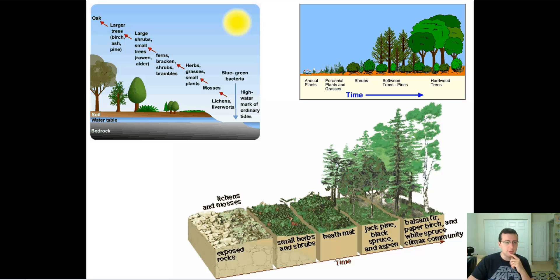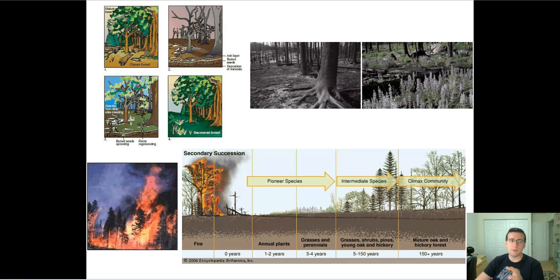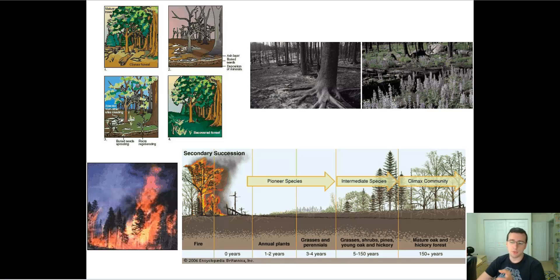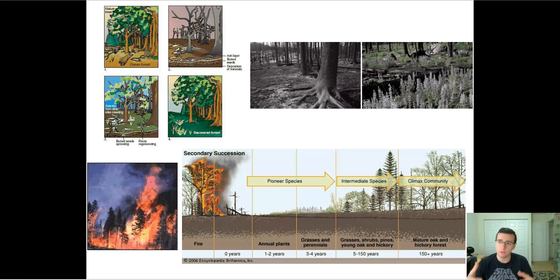There's also secondary succession. Secondary succession is a little bit different, but it's based on the same concept — life finding a way to return to the climax community. This happens when, for example, forest fires happen or when massive habitat destruction takes place. So after the fire, all the dead stuff falls to the ground and becomes nutrients. So it's not the same thing as primary succession where there was no soil and no nutrients.